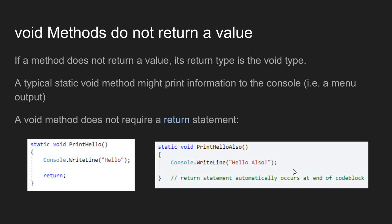I have another example of a static void method called PrintHelloAlso. The work of this method is just to print the string of text 'hello also.' But in this case, I did not include a return statement. Because this method does not return a value, the return statement is implied when you get to the end of the method body code block.